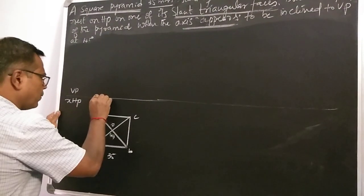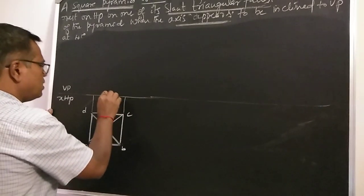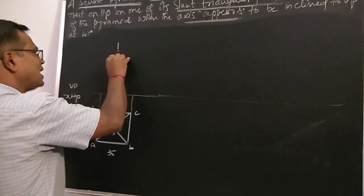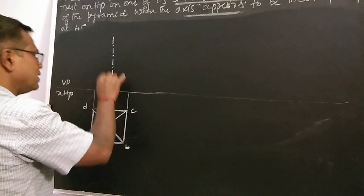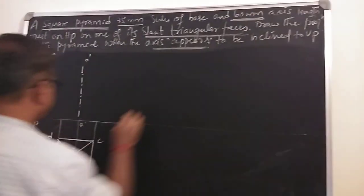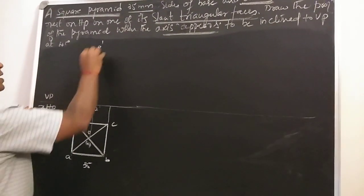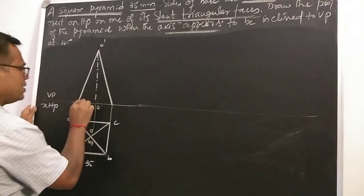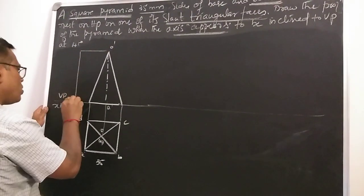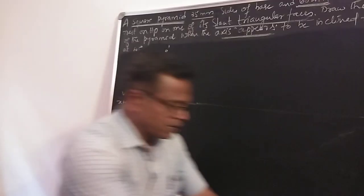To get the front view, draw thin projectors from all the corners. From O1, erect the axis line where O to O1 measures 60mm, then connect O to A and O to C. This gives the initial set of top view and front view of the square pyramid with 35mm base side.